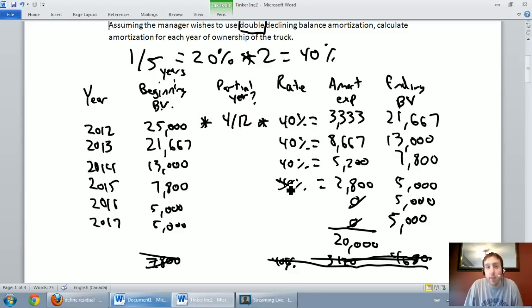Those are the three methods of amortization taught in most intro accounting classes. Certainly those are the three that I touch on in a big way in my class. I hope you've learned and understood all of them. In the next video, we're going to talk about how to sell an asset at a gain or loss.